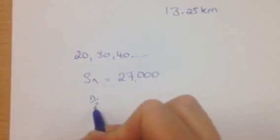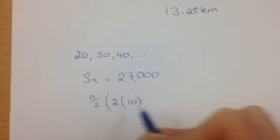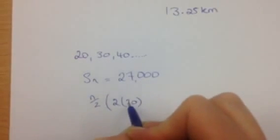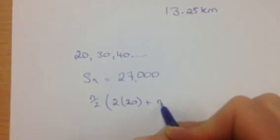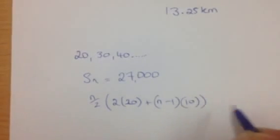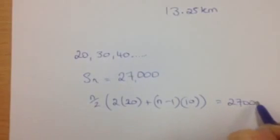So that's n over 2, 2 times a plus n minus 1 times d is equal to 27,000.